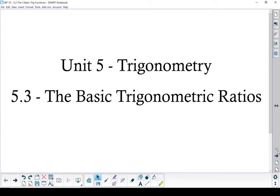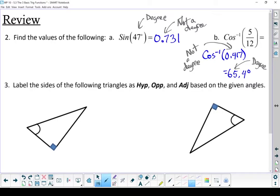Unit 5 Trigonometry Section 5.3 The Basic Trigonometric Ratios. Next part of the review is let's label the sides of the following triangles.